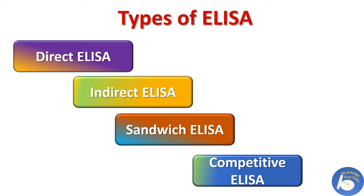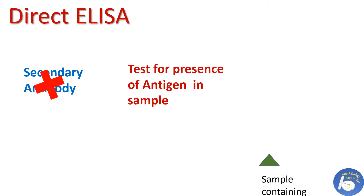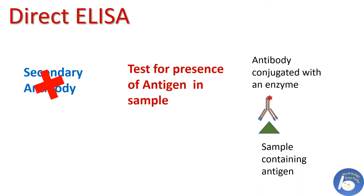If you want to know the procedure, principle and materials required for ELISA, please check out the link given above. First is direct ELISA. In this type of ELISA there is no need of a secondary antibody. In direct ELISA we test for the presence of antigen rather than antibody. The patient sample that may contain antigen adheres on the plate well and is identified with a primary antibody conjugated with an enzyme. That is why it is called direct ELISA.